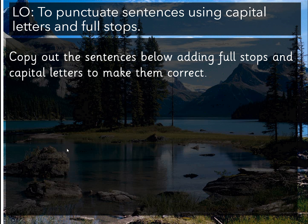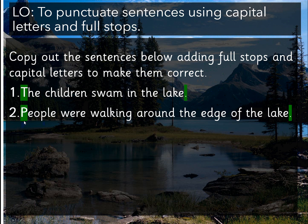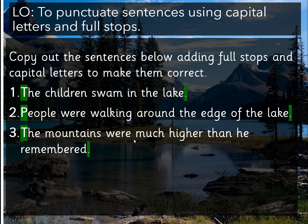I bet you've done brilliantly. What I've done is highlighted where the capital letters and full stops go so you'll see them more easily. The first one: 'The children swam in the lake' — ends with a full stop and begins with a capital T. 'People were walking around the edge of the lake' — full stop at the end, capital P at the beginning. 'The mountains were much higher than he remembered' — again capital, full stop.